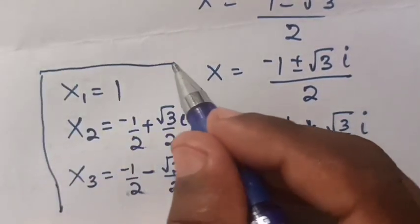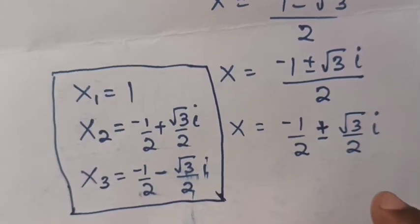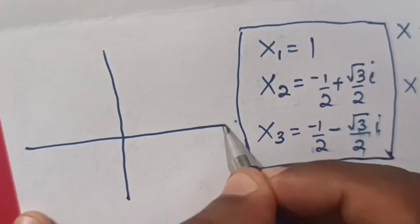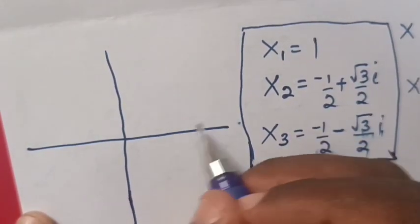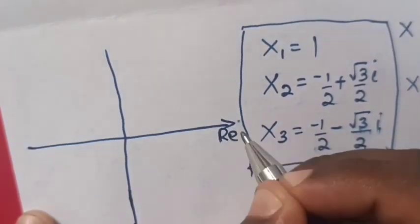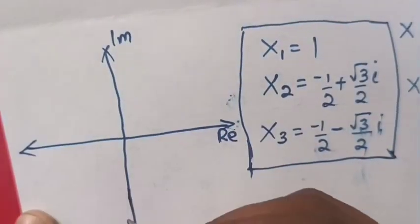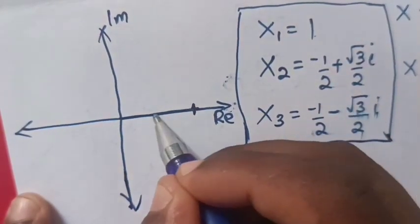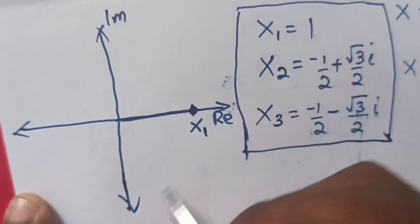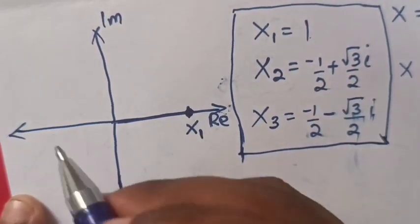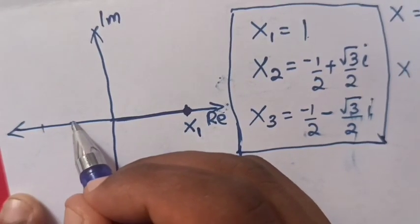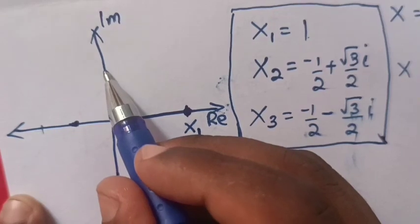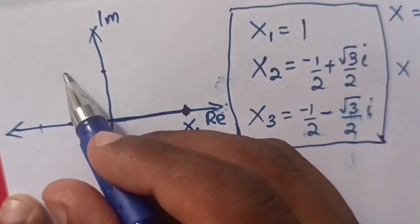Now how to draw these values of x in the graph. The graph will be in the plane of real numbers and the plane of imaginary numbers. The x-axis is the real number axis and the y-axis is the imaginary number axis. From x₁ = 1, the real part is 1, so we plot it at (1, 0). This is x₁. Now for x₂, the real part is -1/2, so we go to -1/2 on the real axis.